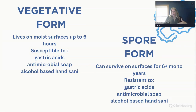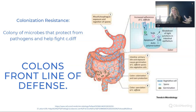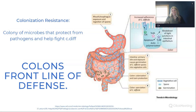Talking about antimicrobials and different things we can use to help kill spores — if you haven't listened to Dr. Rowling's presentation about hypochlorous acid, you definitely should. The colon's first line of defense is colonization resistance — a colony of microbes that help fight C. diff. If we don't have this first line of resistance, it's going to allow C. diff to take hold. It's really important that we're not burdening our immune system so we have those front lines of defense.